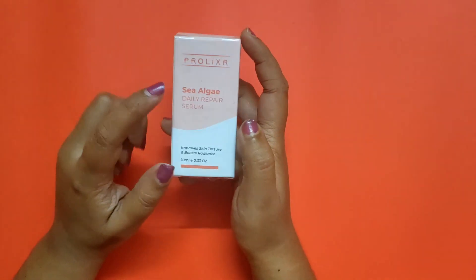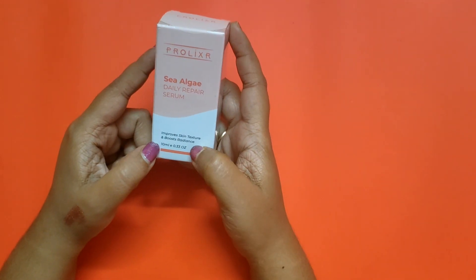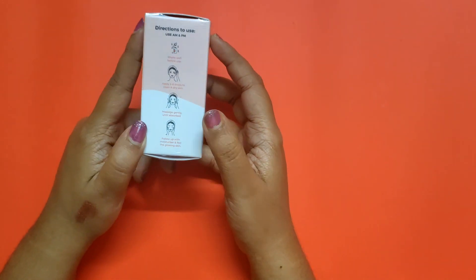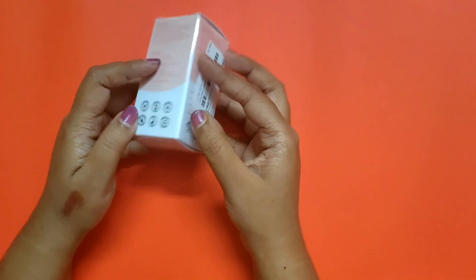Hey guys, welcome to my channel. Today I'll be sharing a review of this Prolexer Sea Algae Daily Repair Face Serum. It's for glowing skin, it's 10 ml, and you get it for 249 rupees, but I got it for 219.